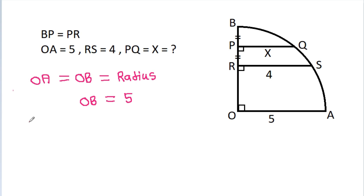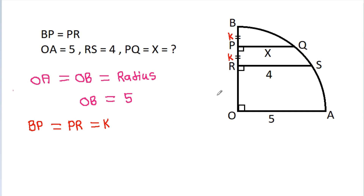We have BP is equal to PR — suppose K. So BP is K, PR is K. So OR will be 5 minus 2K.